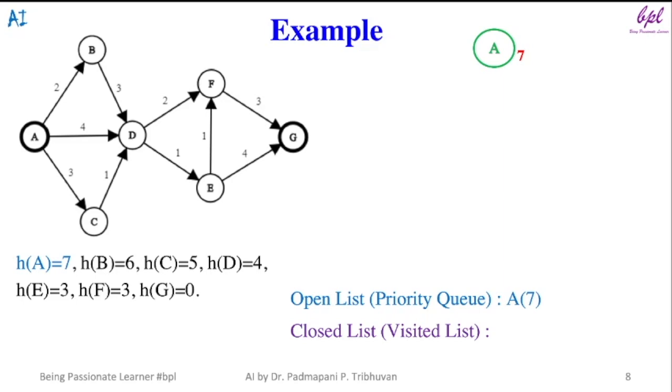A will be added to priority queue or open list along with its heuristic 7. It is the only node in the open list so it will be expanded.